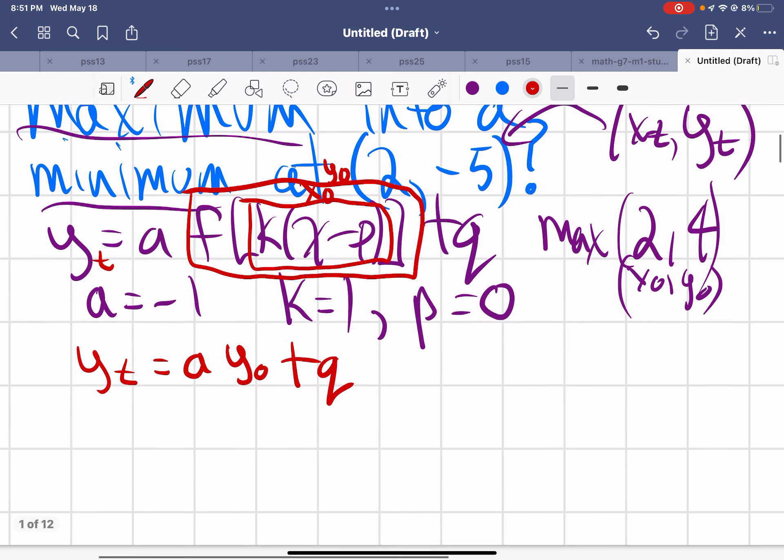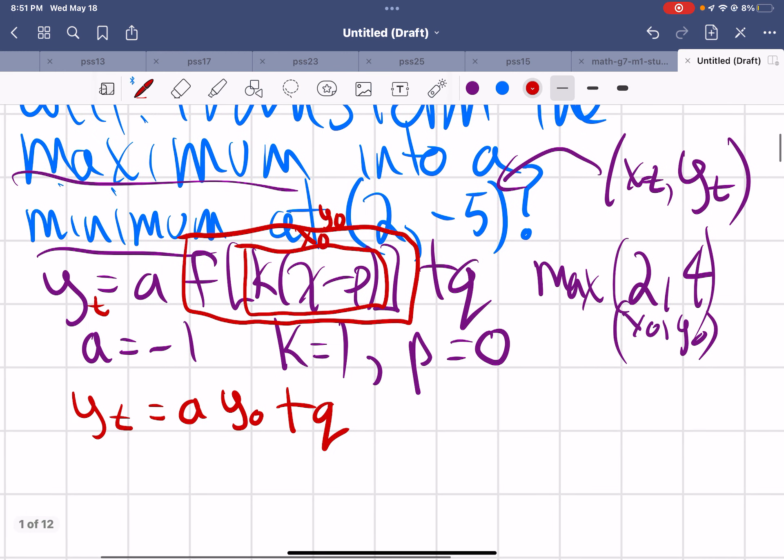So I already look over here, and I can see my Y naught is 4, and my Y transformed is negative 5. I picked A at negative 1. Why did I do that? Because I knew the maximum turned to a minimum. There was a vertical reflection. I could pick negative 4, negative 8, negative 10. I know it's reflected. So I'm just going to pick negative 1. And then solve for Q.